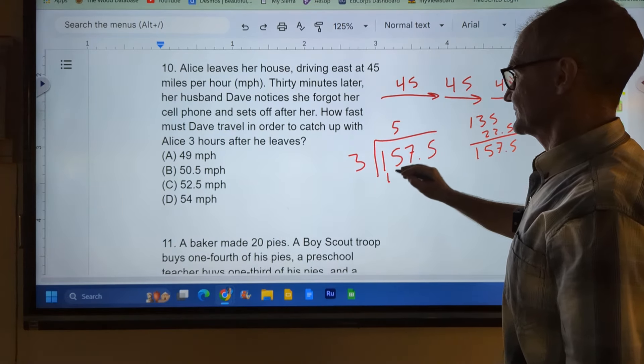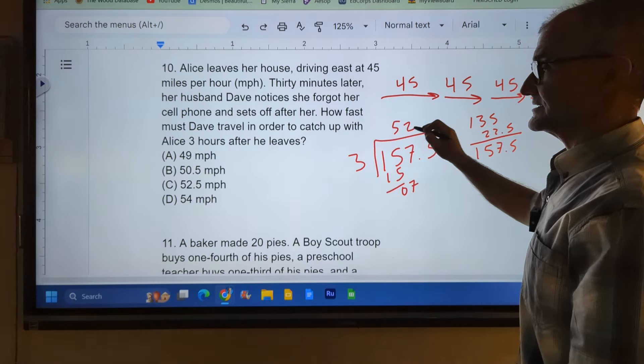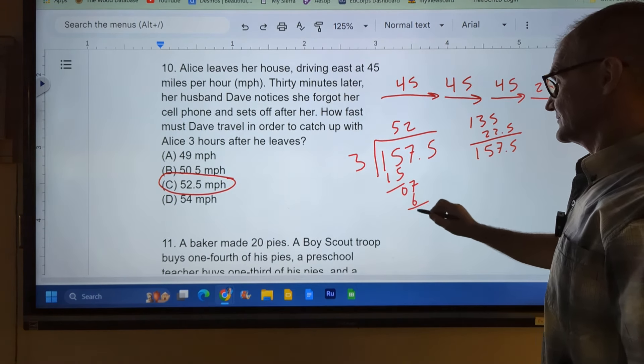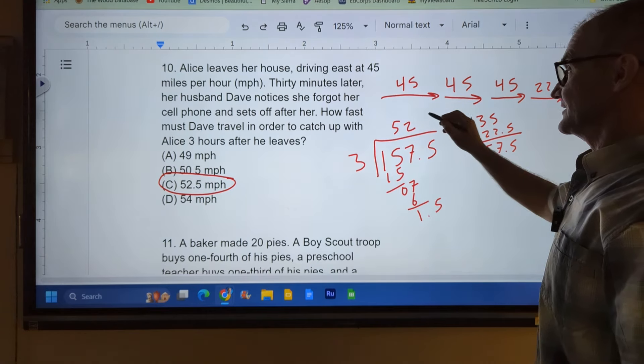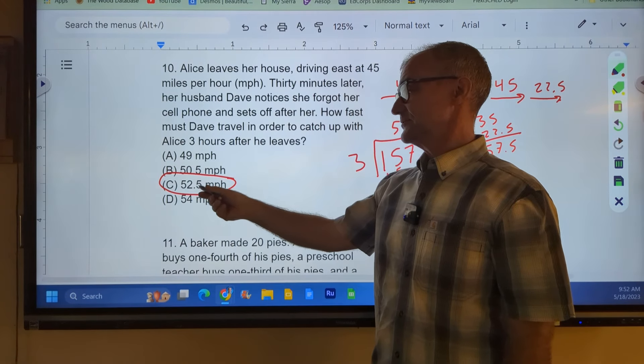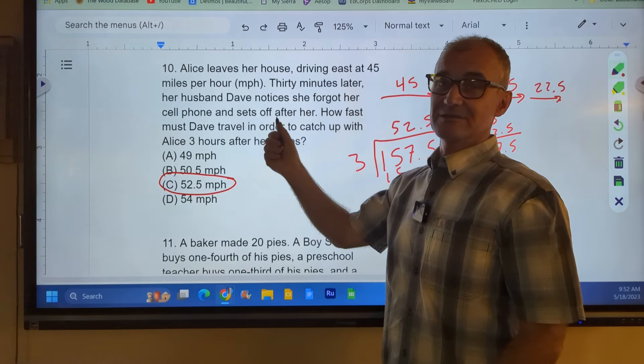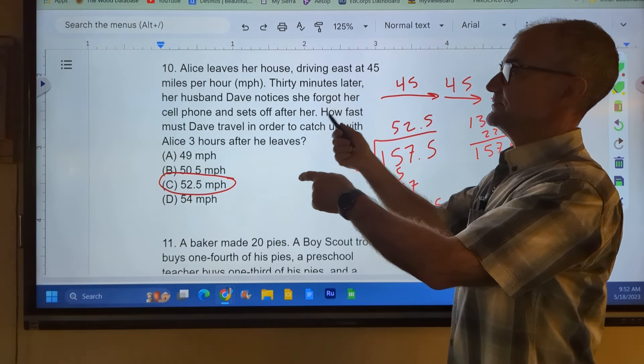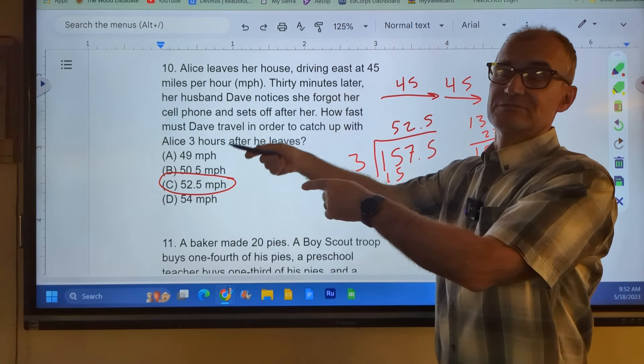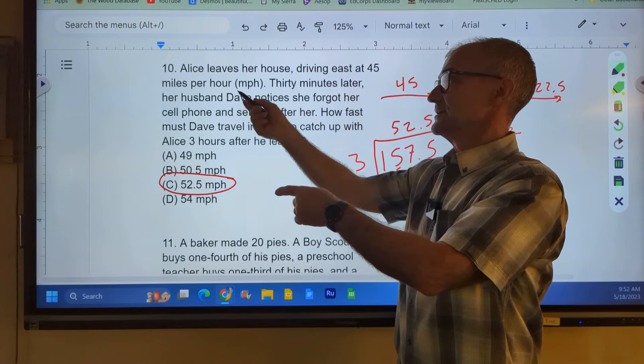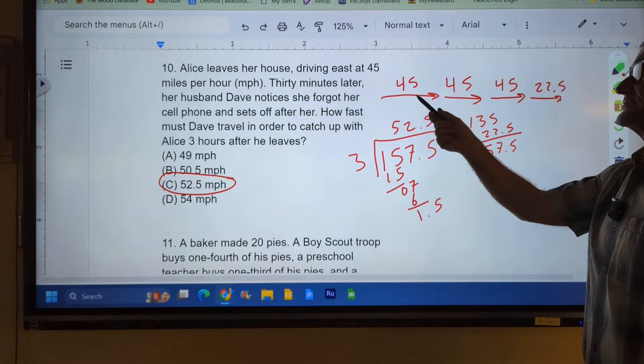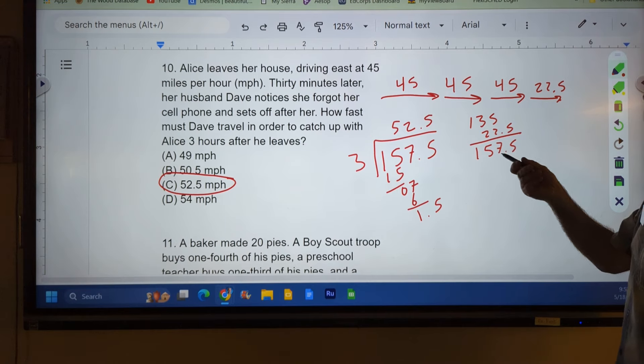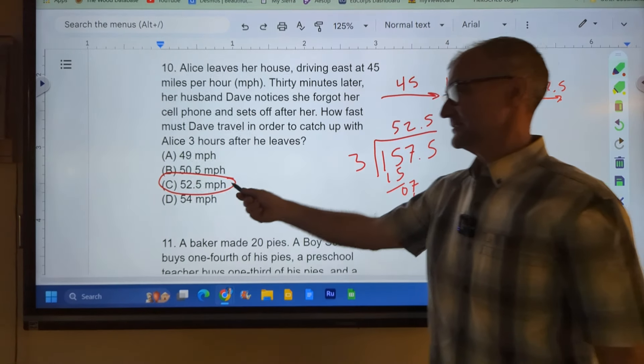3 into 15 is 5 times. 0, 7, 3 into 7 twice. I could probably stop right there because there's only one value that starts with 52. But we'll keep going. 6, 1, 5. 3 into 15, 5 times, 52.5. So Dave has to travel 52.5 when she is traveling 45. Kind of a hard problem because you've got to really decode the words. So she leaves, starts traveling. Thirty minutes later, her husband leaves and he travels for three hours. So he only travels for three hours, but she started thirty minutes earlier. And that's how I know she traveled one, two, three and a half hours at 45 miles per hour for total distance. And that total distance, Dave has to make up in the three hours, and that's where I get the 52.5.